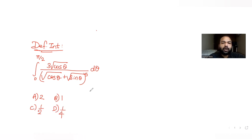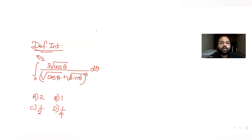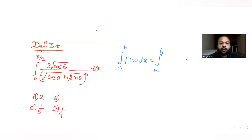So let's understand how to solve this question. Remember one idea: whenever in the expressions you have cos or sin in the numerator and the denominator consists of both sine and cos in definite integration, you can use the property that the integral from a to b of f(x)dx equals the integral from a to b of f(a+b-x)dx.